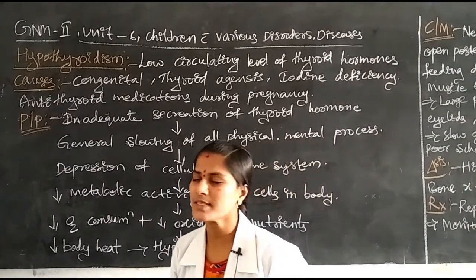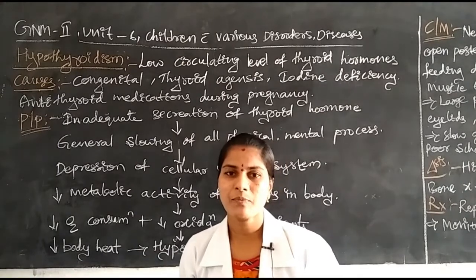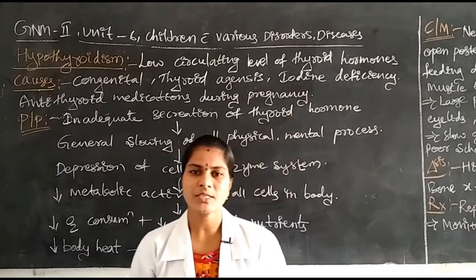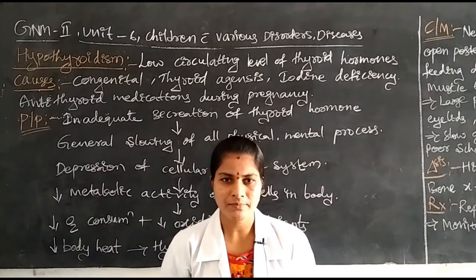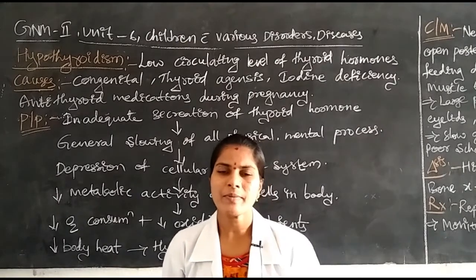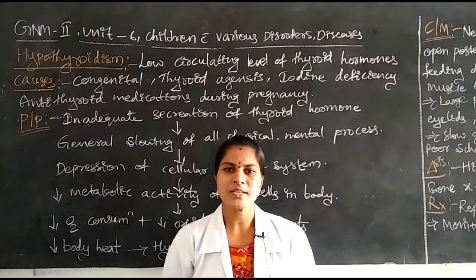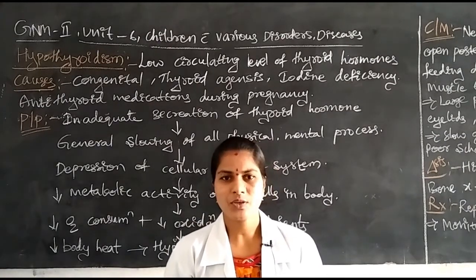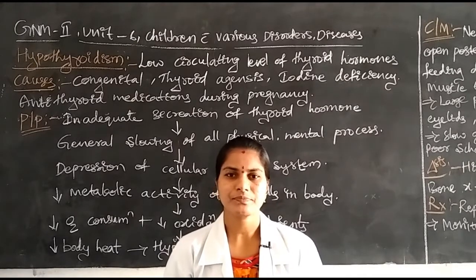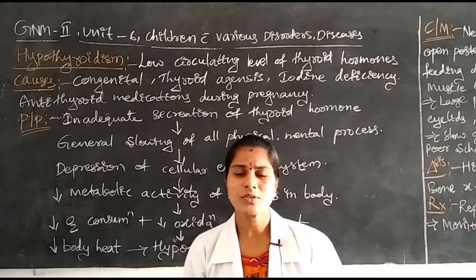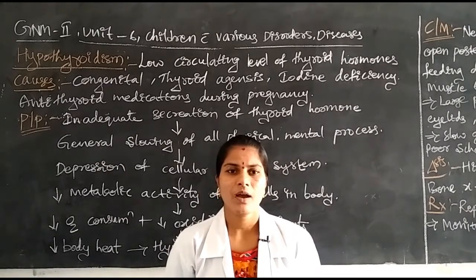What are the causes of hypothyroidism in children? First is congenital — meaning by birth, any structural or functional abnormalities of the thyroid gland. Sometimes if the pregnant mother has thyroid problems like hypothyroidism, it may affect the fetus through placental circulation from mother to fetus. Chromosomal abnormalities or genetic problems can also cause hypothyroidism in the fetus.